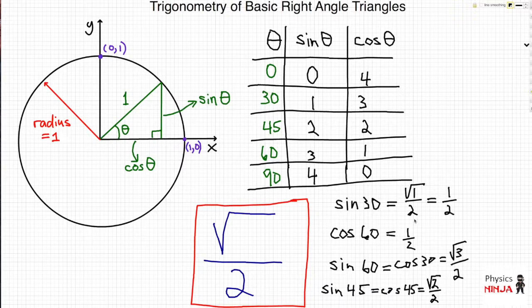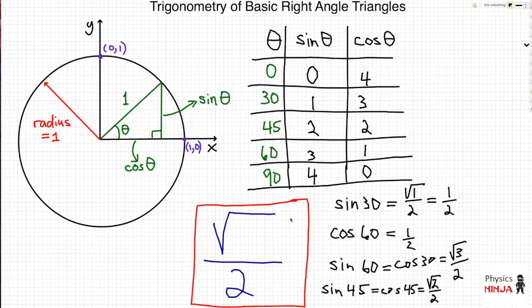Once you know the sine and cosine values, you can easily tabulate what the tangent of angle theta equals for any of these right angle triangles. It's pretty straightforward. Hope that helps.